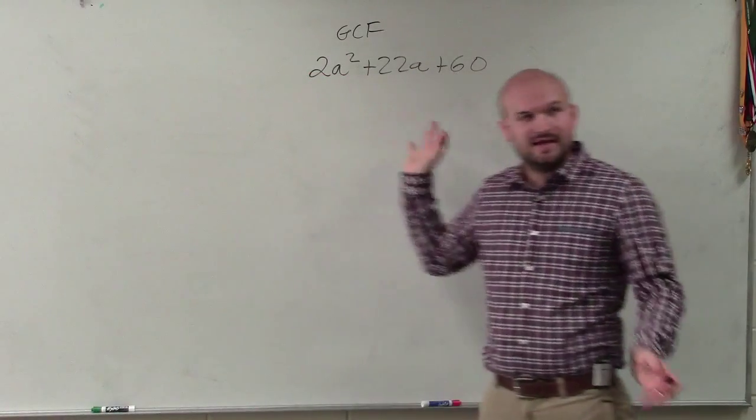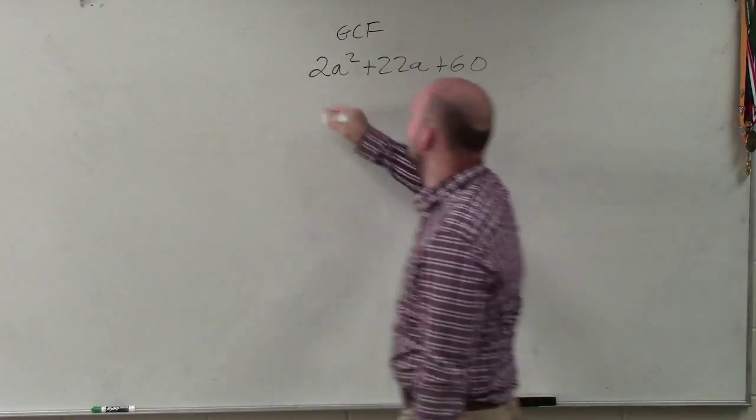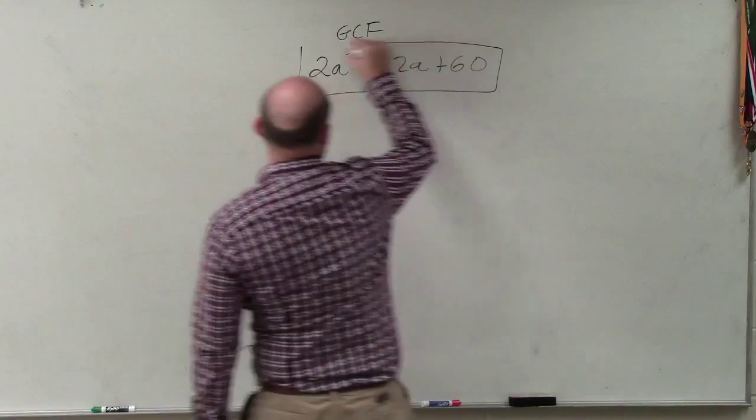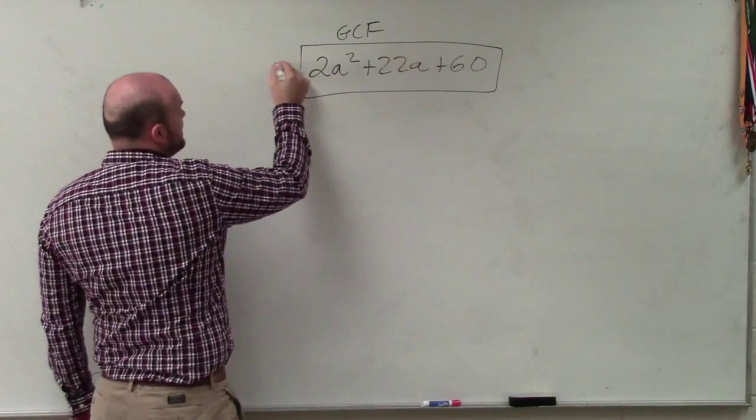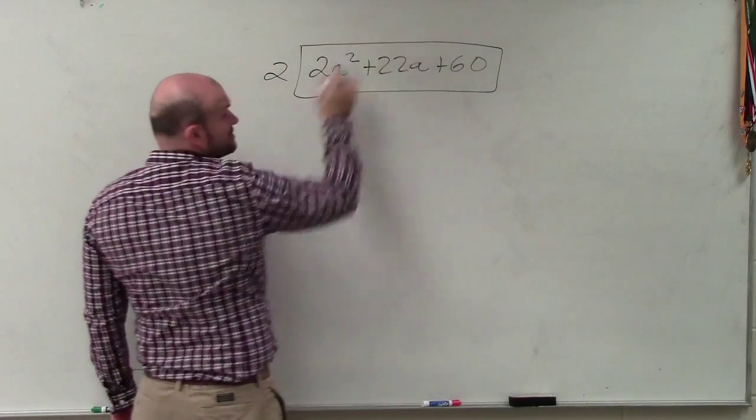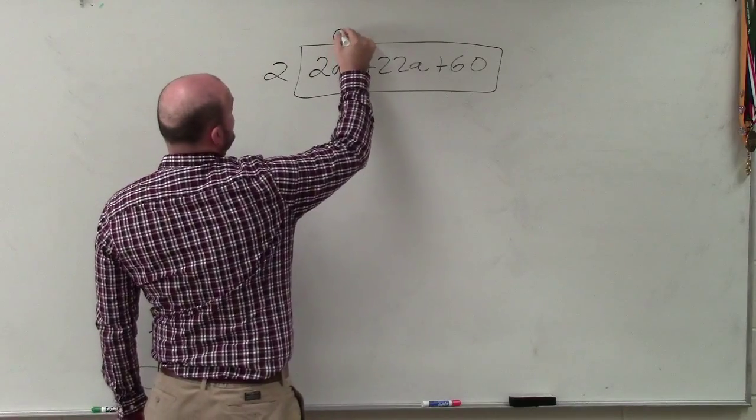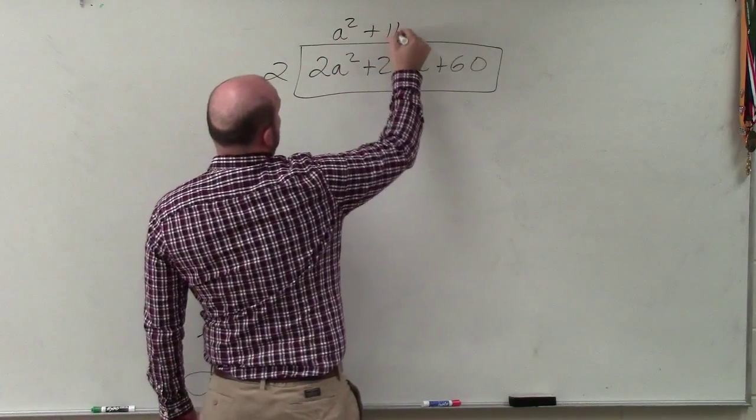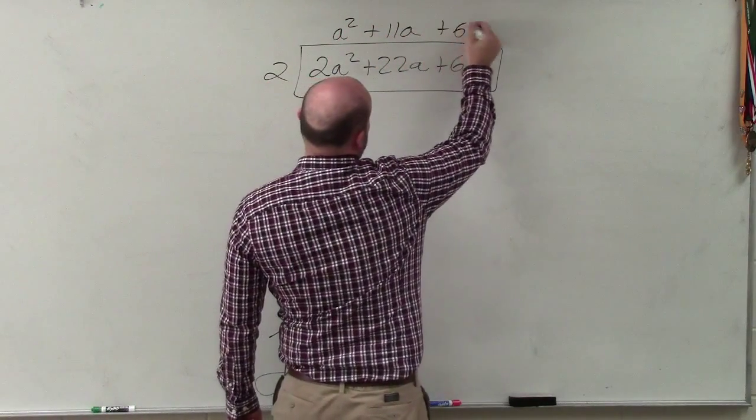Now you could use the box method and determine what would be the common side length here. You guys can see that the common side length is going to be 2. So you could factor out a 2. That would give you a² + 11a + 60.